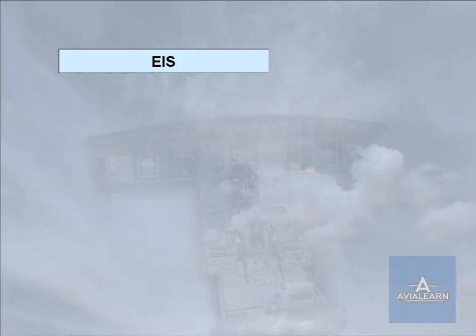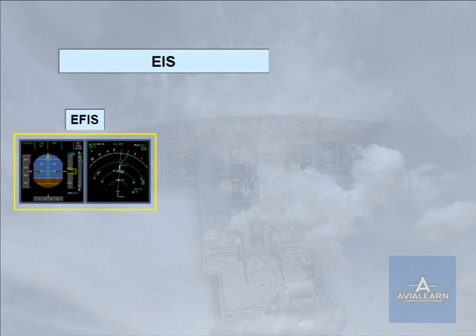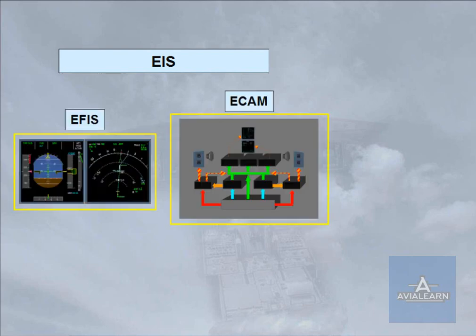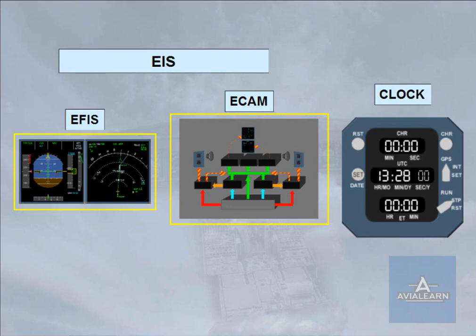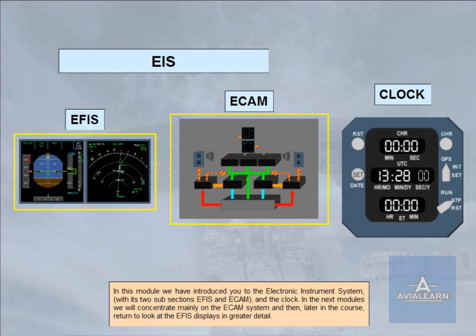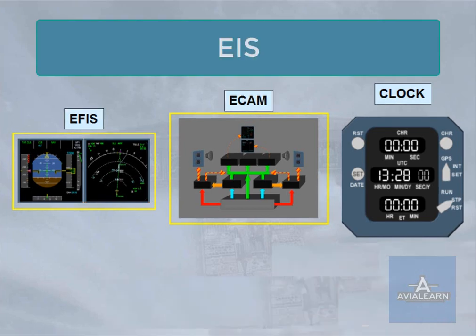In this module, we have introduced you to the electronic instrument system, with its two subsections — EFIS and ECAM — and the clock. In the next modules, we will concentrate mainly on the ECAM system, and then, later in the course, return to look at the EFIS displays in greater detail. Thank you.